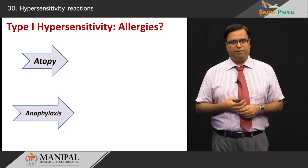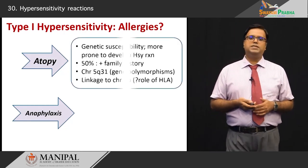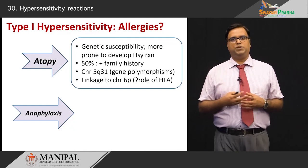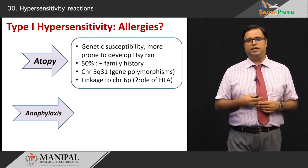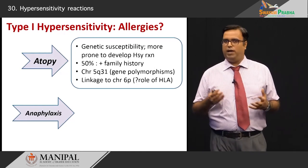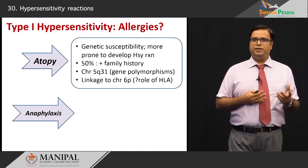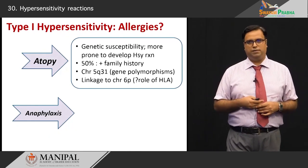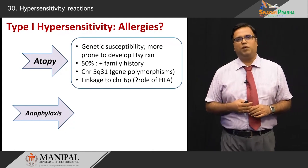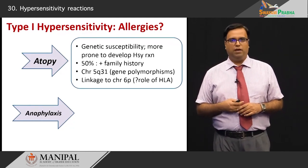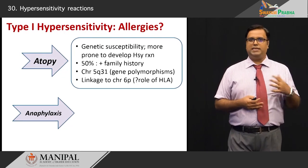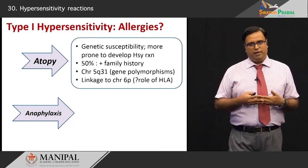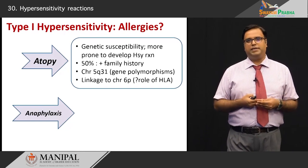Under type 1, we know something called atopy — certain individuals who have a genetic predisposition or susceptibility to develop type 1 reactions more than others. Cross-sectional studies show a 50% antecedent family history of similar disorders. It has to do with polymorphisms in a gene on chromosome 5, long arm region 3q1, and has also been linked to chromosome 6p, where HLA comes into play.